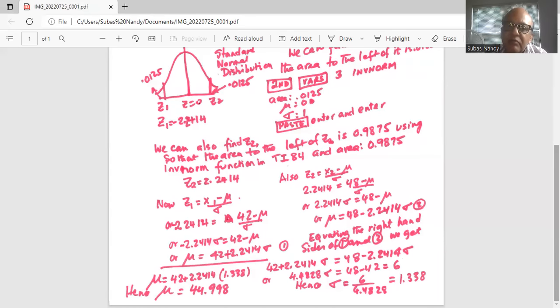Once we found the Z values, Z is a standard normal variable. We express them in terms of the mean and the standard deviation. Now we do not know mean and standard deviation. So we wrote two equations for the mean mu, and then equated them and solved for sigma, which is the standard deviation, from which, after obtaining standard deviation, we substituted it back in one of the equations for mu and solved for mu, which is the mean, 44.998.